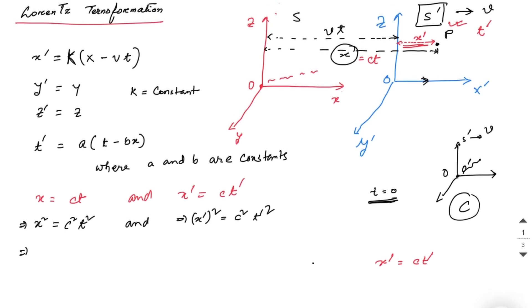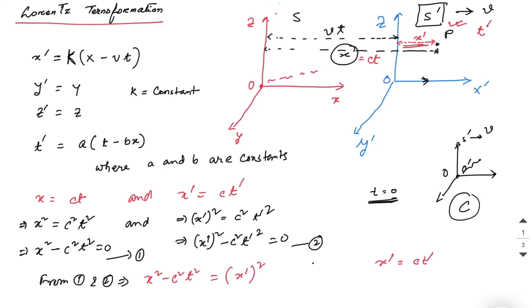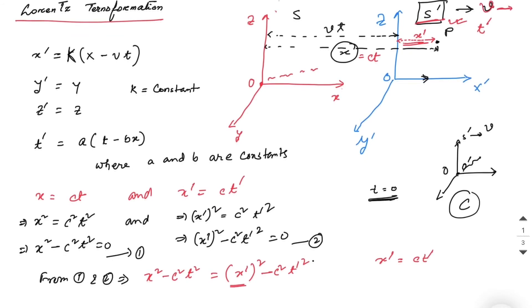These two equations imply x² − c²t² = 0 and x'² − c²t'² = 0. From equations one and two, this implies x² − c²t² = x'² − c²t'².